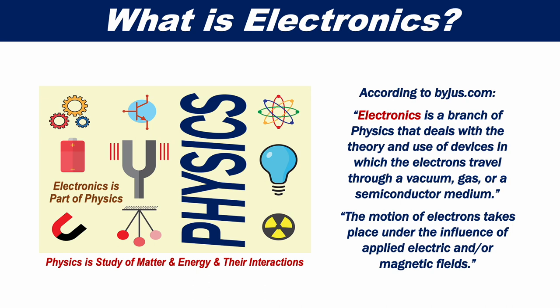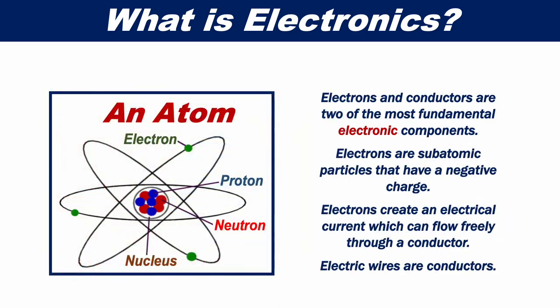The motion of electrons takes place under the influence of applied electric and/or magnetic fields. Electrons and conductors are two of the most fundamental electronic components. Electrons are subatomic particles that have a negative charge. Electrons create an electrical current, which can flow freely through a conductor. Electric wires are conductors.